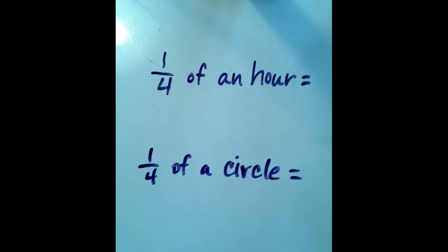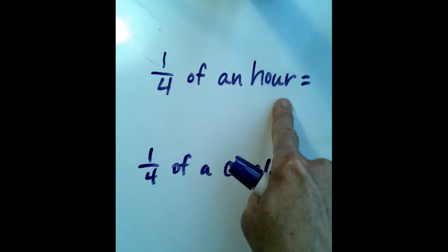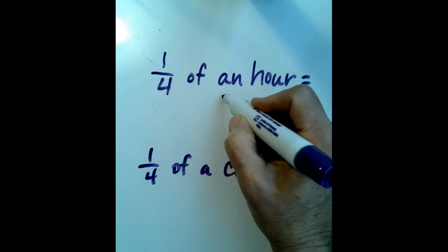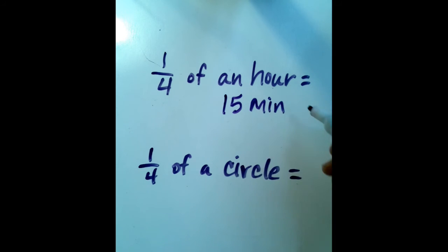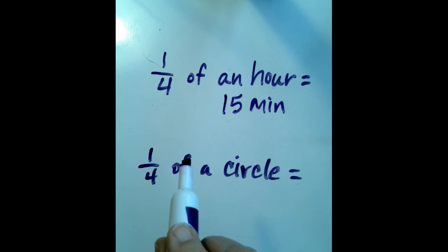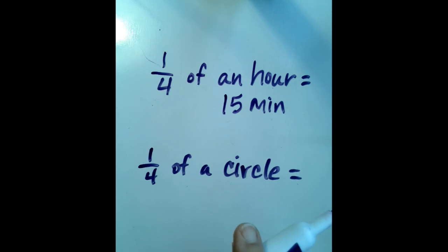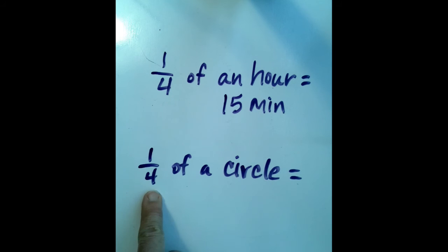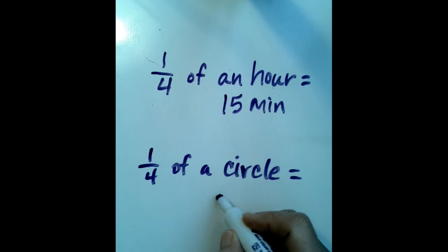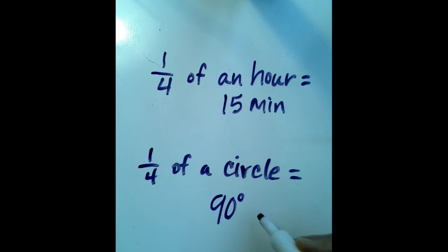Every one-fourth of a circle was created by drawing a 90-degree angle. What we just drew shows us that one-fourth of an hour is the same as 15 minutes, because when the minute hand travels from the 12 to the 3, that is a time frame of 15 minutes. If we think of the clock as a circle, one-fourth of the circle results in a 90-degree angle — so clocks, because they are circles, can be thought of in terms of fractions, minutes, and angles.